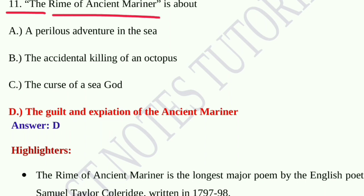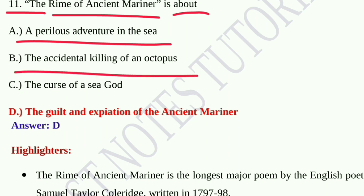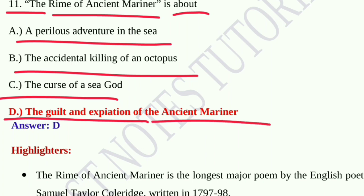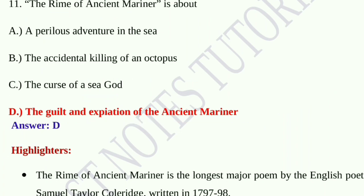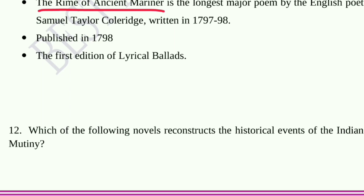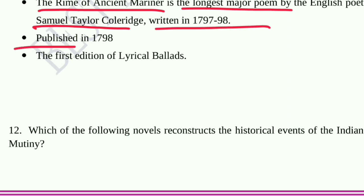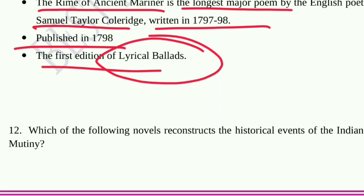Question number eleven: The Rime of the Ancient Mariner is about option A, a perilous adventure in the sea; option B, the accidental killing of an octopus; option C, the curse of a sea god; option D, the guilt and expiation of the Ancient Mariner. Option D is the correct answer. The Rime of the Ancient Mariner is the longest major poem by English poet S.T. Coleridge, written in 1797–98 and published in 1798 in the first edition of Lyrical Ballads, a collection of poetry.